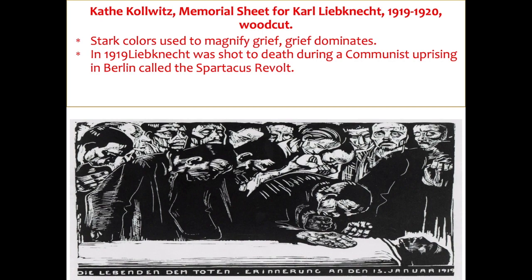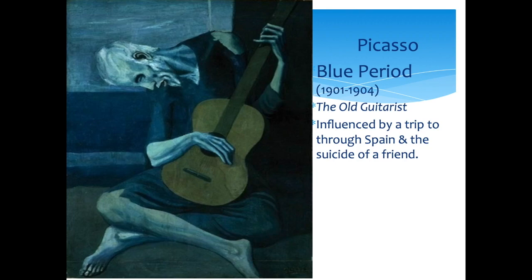The final German Expressionist you need to know is a female painter: Käthe Kollwitz. This is the Memorial Sheet for Karl Liebknecht, created 1919 to 1920, a woodcut — similar to Albrecht Dürer's woodcuts from Germany. There's a dramatic use of black and white to magnify grief. You see a person lying in their coffin, mourners at a funeral. In 1919, Liebknecht was shot to death during a Communist uprising in Berlin called the Spartacus Revolt. Even without knowing the political context, you feel the sorrow these people have.